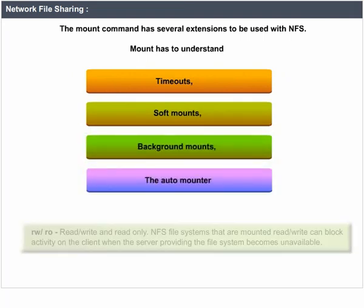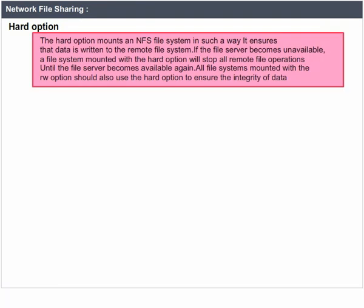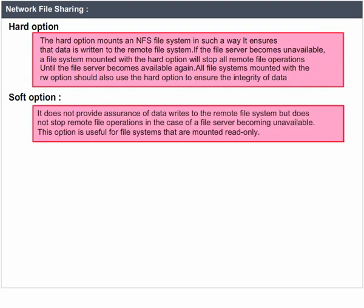RW or RO (read-write and read-only): NFS file systems mounted read-write can block activity on the client when the server becomes unavailable. Hard option: the hard option mounts an NFS file system in such a way that it ensures data is returned to the remote file system. If the file server becomes unavailable, a file system mounted with the hard option will stop all remote file operations until the server becomes available again. All file systems mounted with the read-write option should also use the hard option to ensure data integrity.